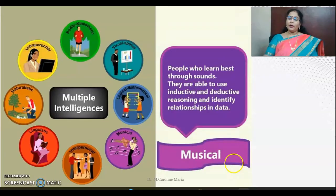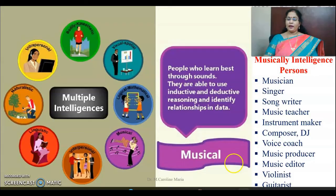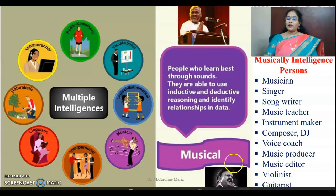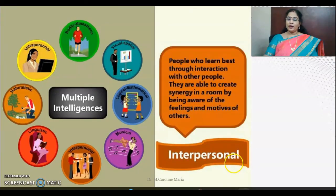Musical intelligent people learn best through sounds. They are able to use inductive and deductive reasoning and identify relationships in data. Examples include musicians, singers, songwriters, music teachers, instrument makers, composers, DJs, voice coaches, music producers, music editors, violinists, guitarists, and others in the music field.